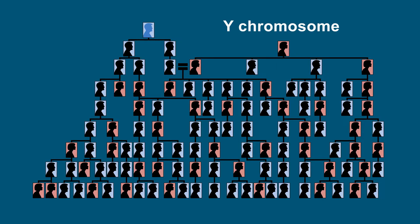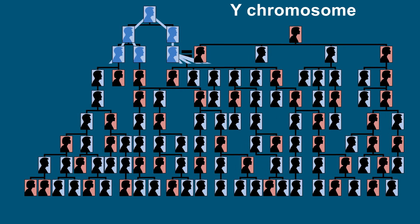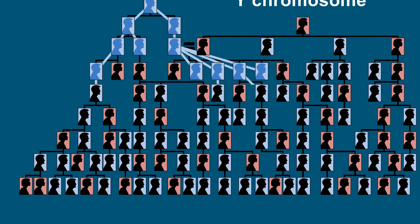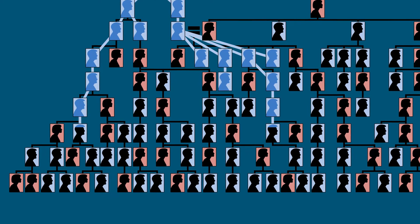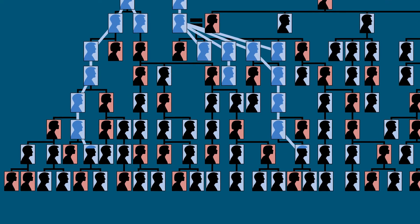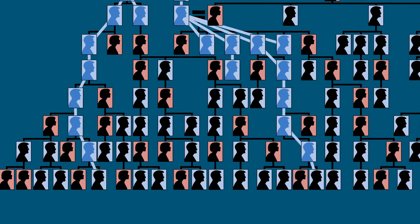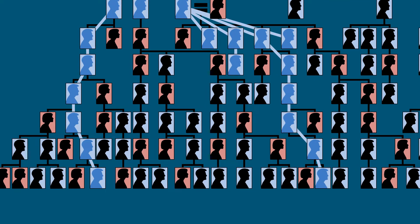The next segment of DNA that I was interested in was the Y chromosome. The Y chromosome also has a very simple pattern of inheritance — it is passed down only through the male line. So, all men related through the male line should have identical or near-identical Y chromosome types.